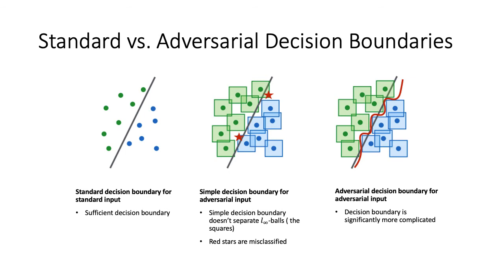These figures illustrate decision boundaries for classifier models. On the left, we have a standard decision boundary for standard input that correctly classifies all of our data points. In the middle, we have the effects of an adversary corrupting our inputs to be falsely classified — these points are shown by the red stars. In order to protect against these adversarial attacks, we need to adjust the decision boundary to be significantly more complicated, which is shown on the right.